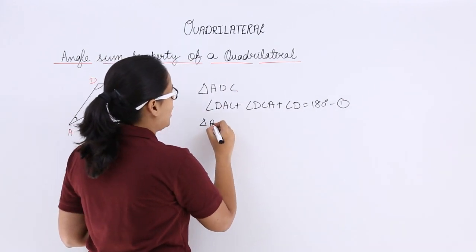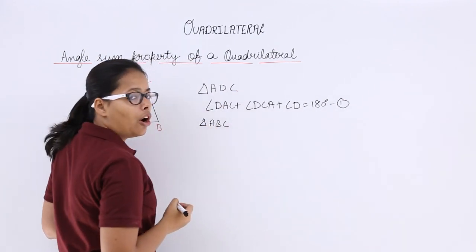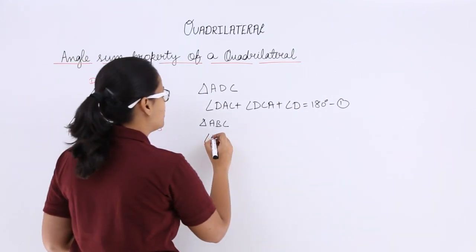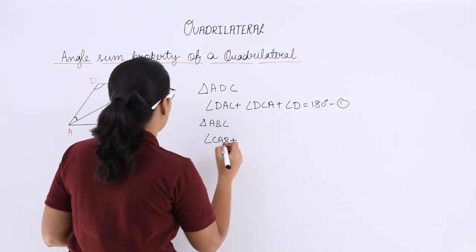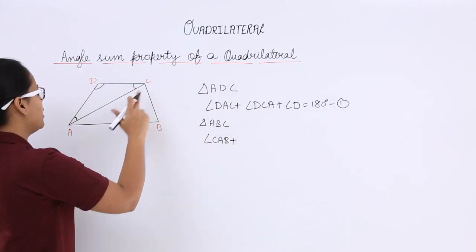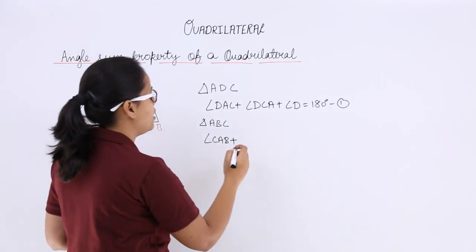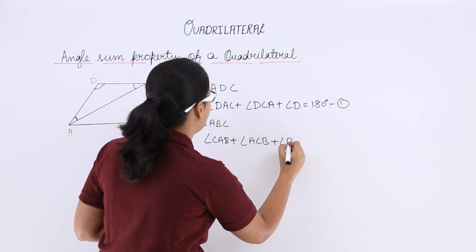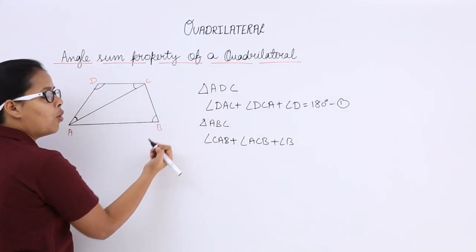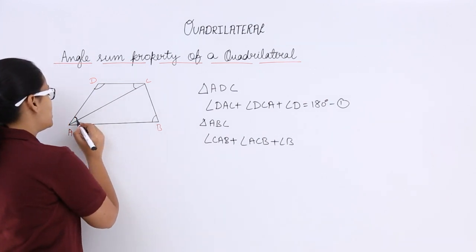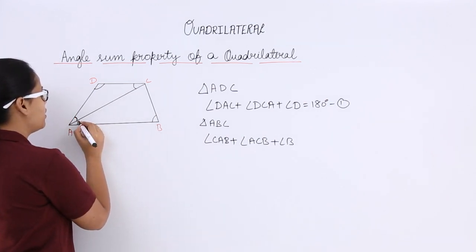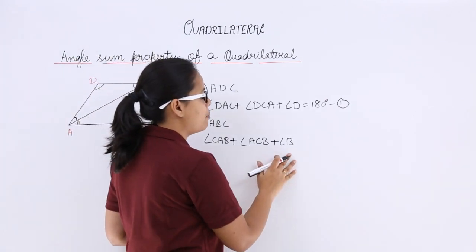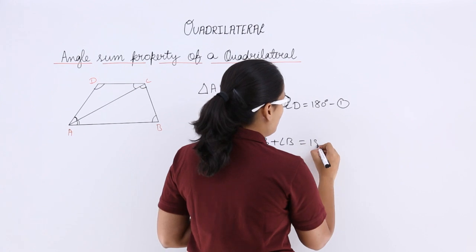Now take triangle ABC. How will you proceed for this? Take angle CAB, plus angle ACB, plus angle B — here you can see angle AB is the whole angle B — equals 180 degrees. This is the second equation.